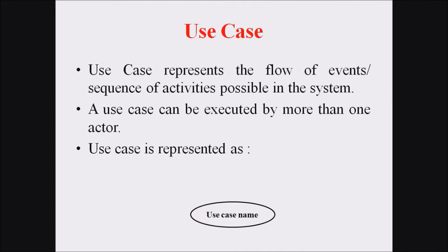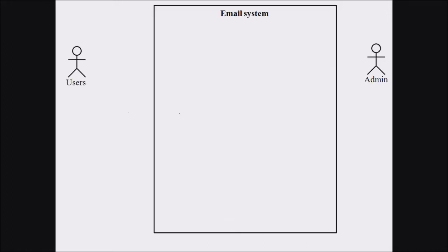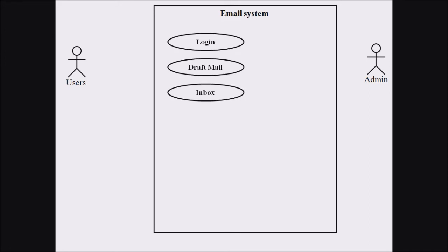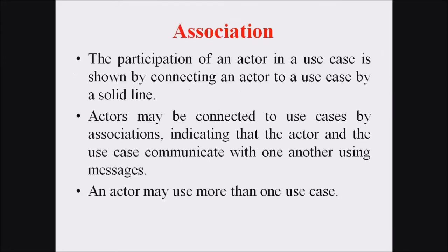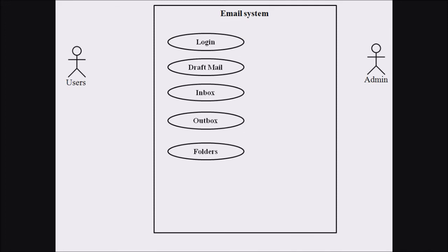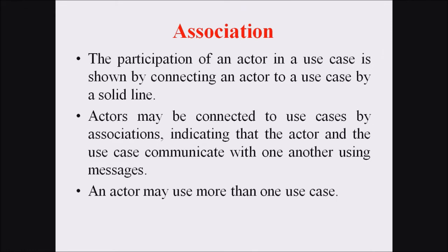A use case represents the flow of events or sequence of activities possible in a system. A use case can be executed by more than one actor and is represented within an ellipse with the use case name. In this email system, we consider different use cases or processes like login, draft an email, inbox, outbox, and folders. The email system has two different actors and five different use cases: login, draft an email, inbox, outbox, and folders.